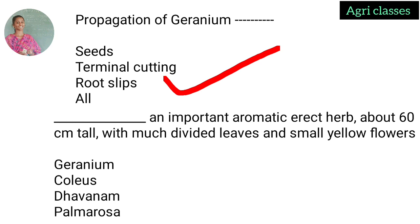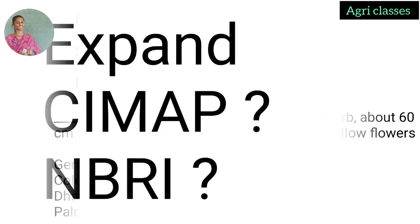Next question: which plant is an important aromatic erect herb about 60 centimeters tall, with much-divided leaves and small yellow-colored flowers — geranium, Coleus, davanum, or palmarosa? The correct answer is davanum. Davanum is a small herb of about 60 centimeters with yellow-colored flowers and a good smell.